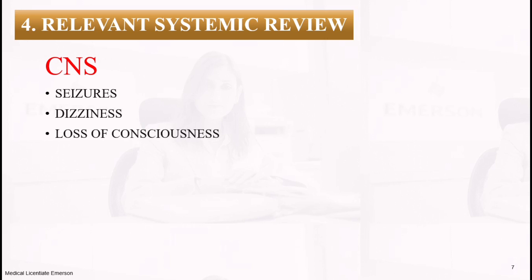If a symptom in the systemic review is positive, don't just write 'positive' and leave it — you must expand it. For example, if seizures were present, ask when the seizure started, how the body moved, whether there was any aura or warning signs, and the like. You have to know how to take a seizure history. Ask about seizures, dizziness, and loss of consciousness.